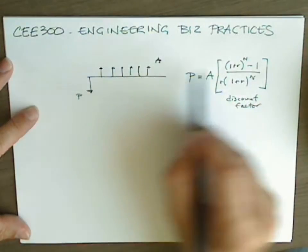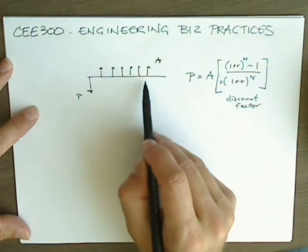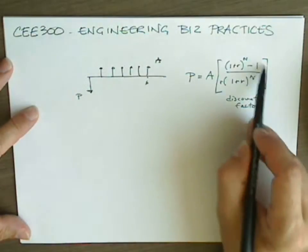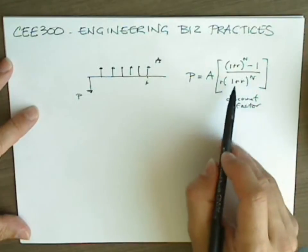In our diagram, 1, 2, 3, 4, 5, 6, the number of compounding periods, N. But when we compute everything within the brackets, that's called the discount factor.